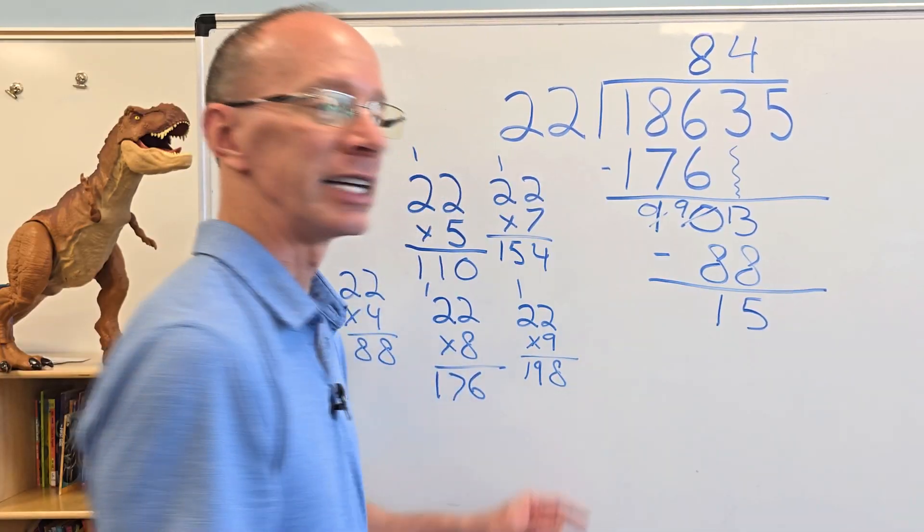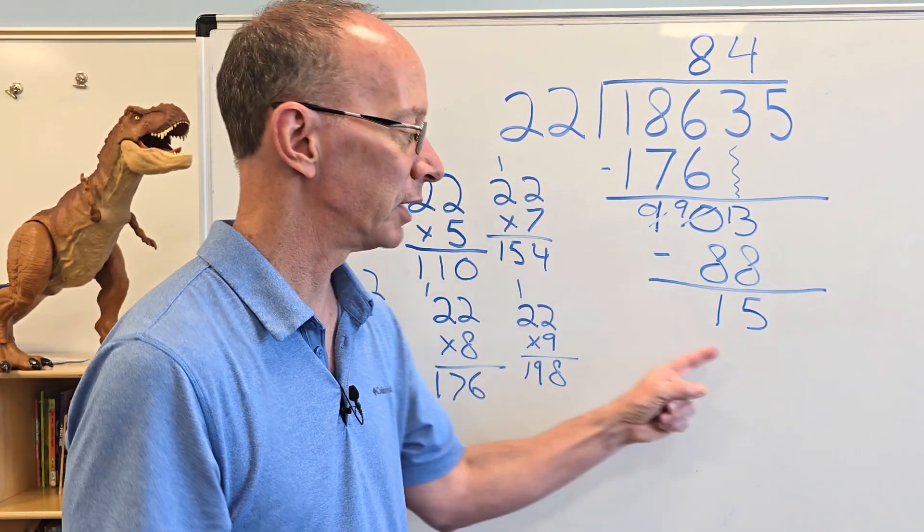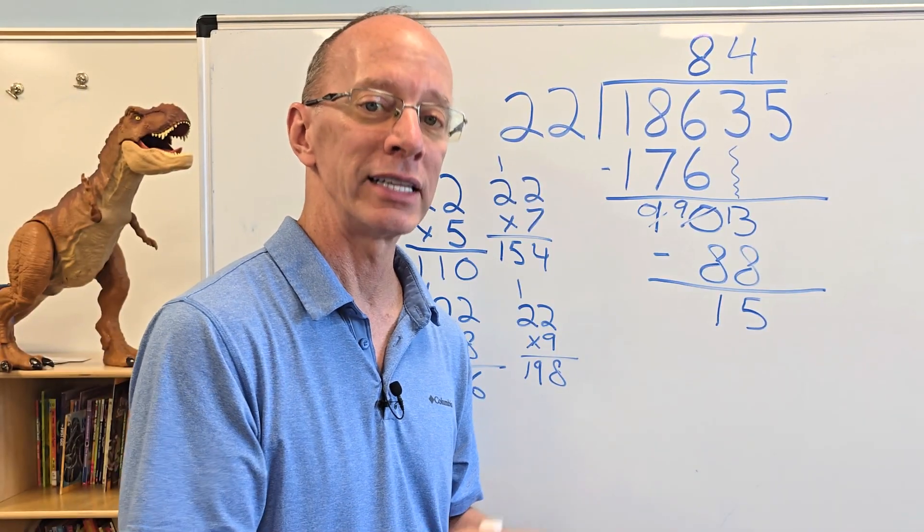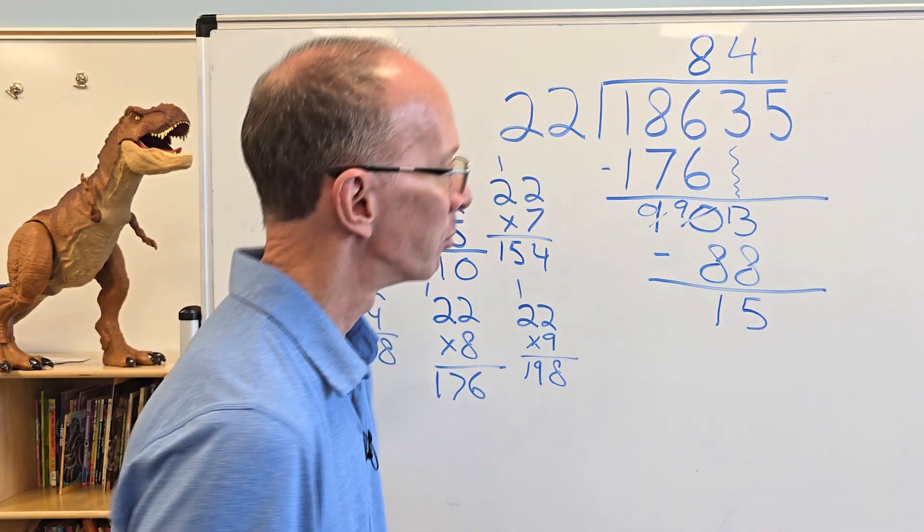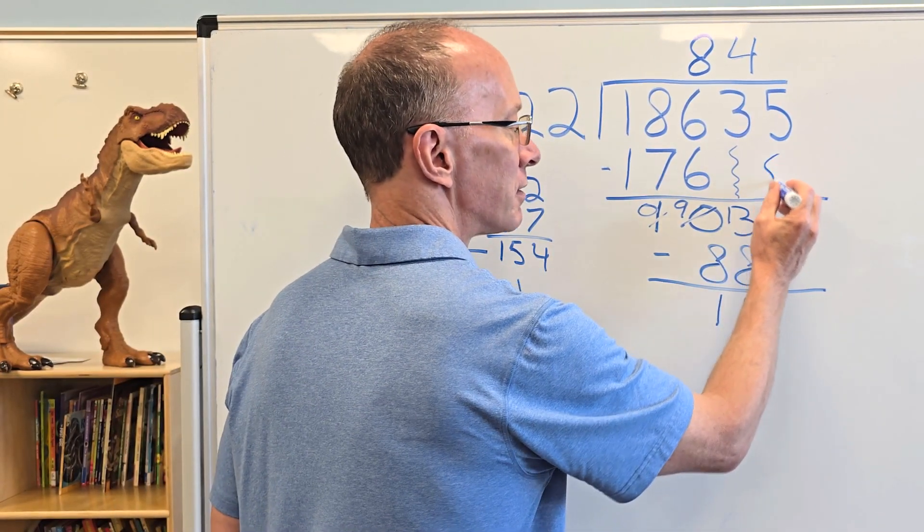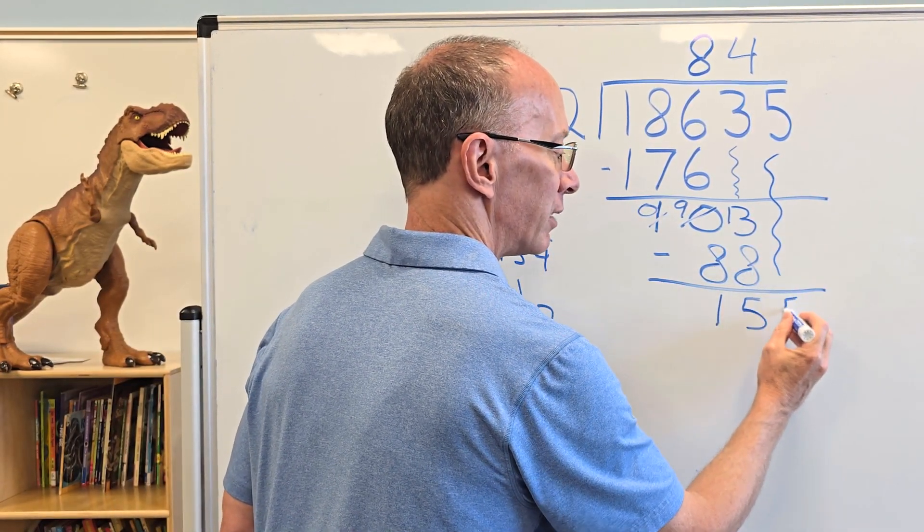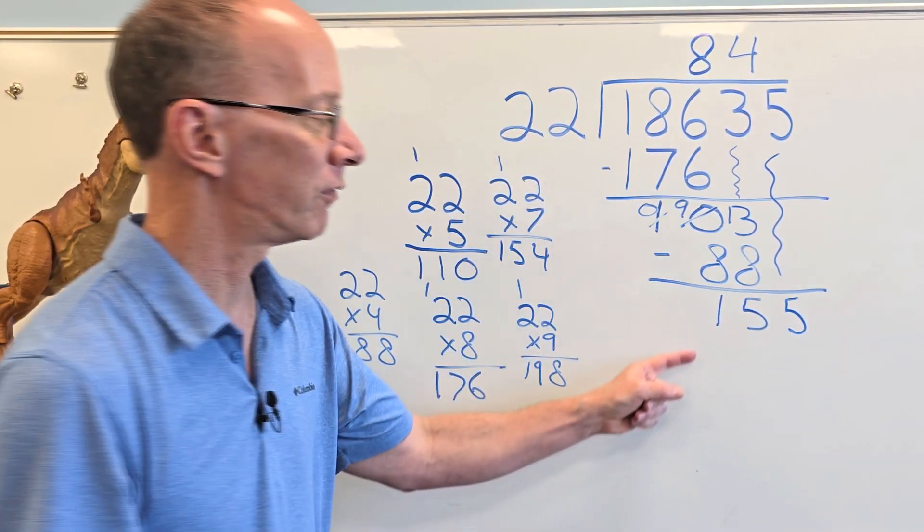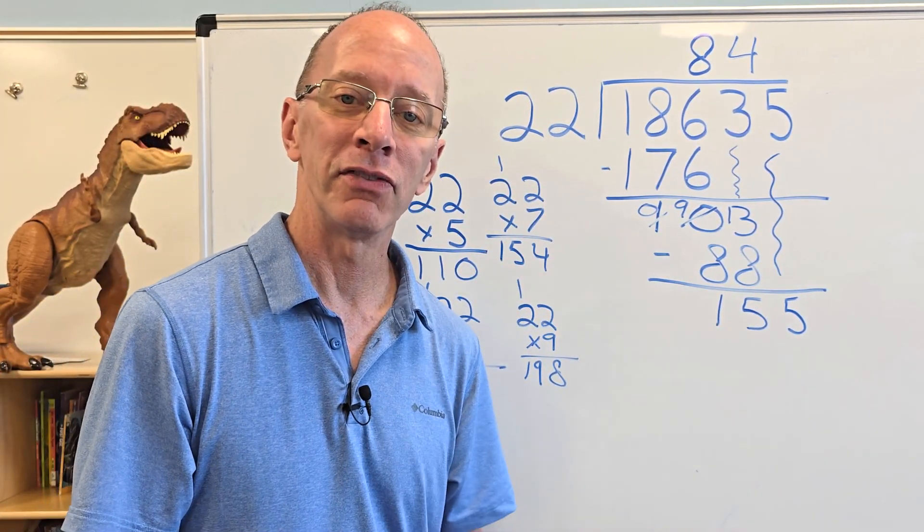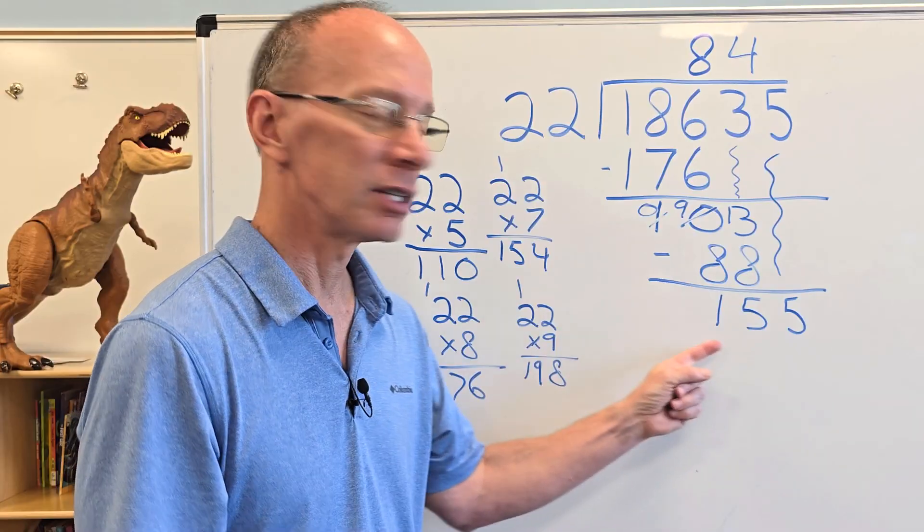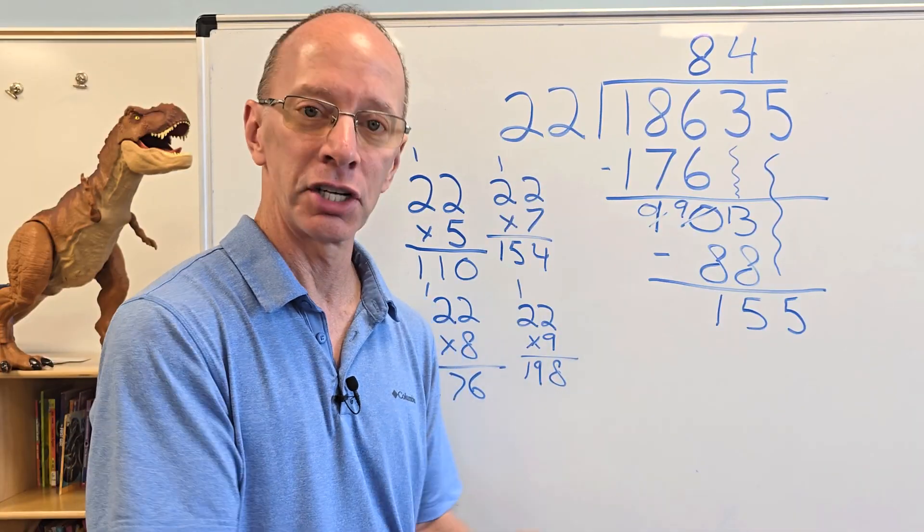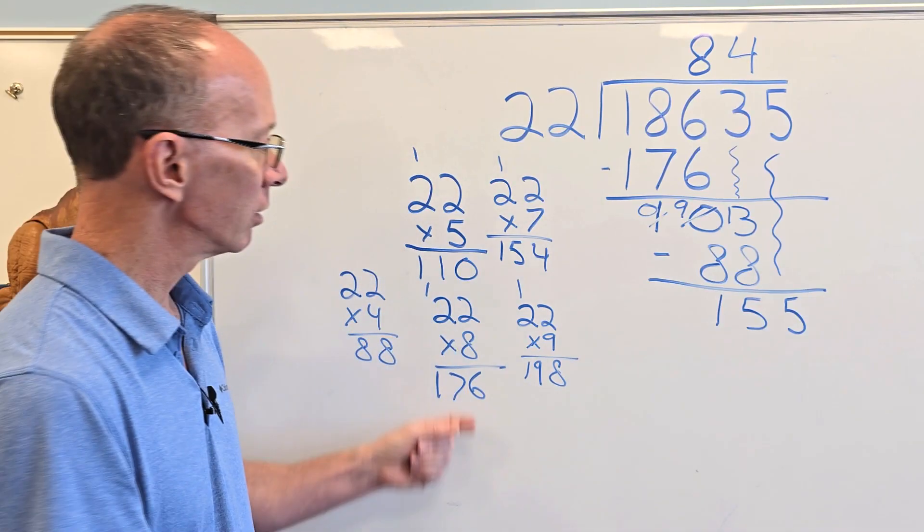Now the next step is, because I can't put 22 into 15, next step is to bring that next number down. Bring it down, all the way down here. Now I have 155. Can I put 22 into 155? You sure can. How many times? Let's take a look here.